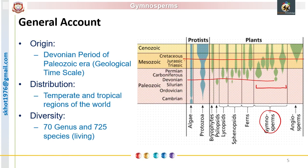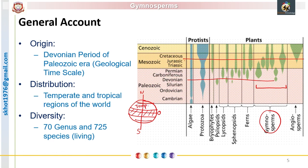Today the gymnosperms are distributed in the tropical and temperate regions of the world. From the equator towards 23 degrees north and 23 degrees south we have the tropical region, and up to 60 degrees north and 60 degrees south we get the temperate region. At present, gymnosperms are represented by 70 genera and about 725 species.